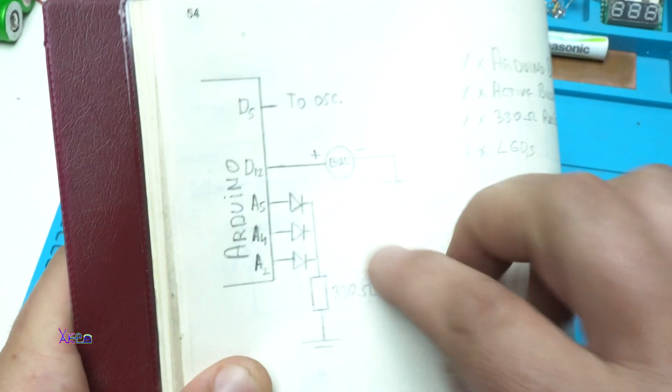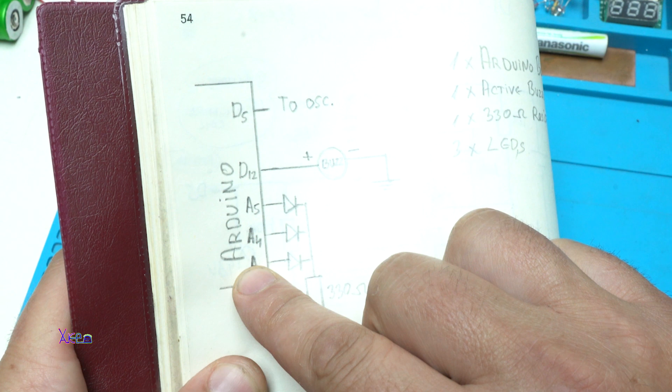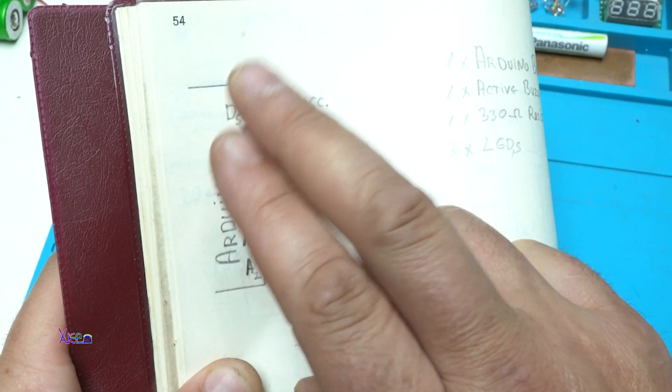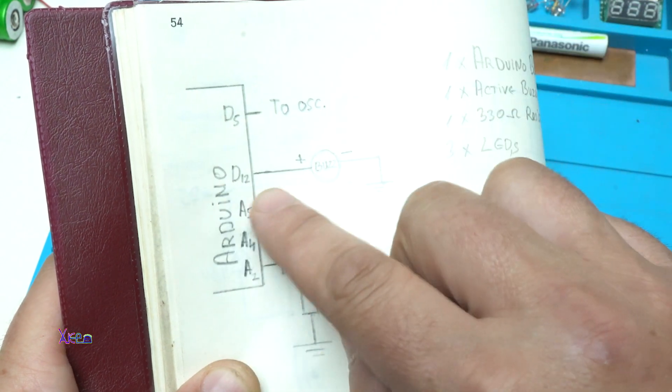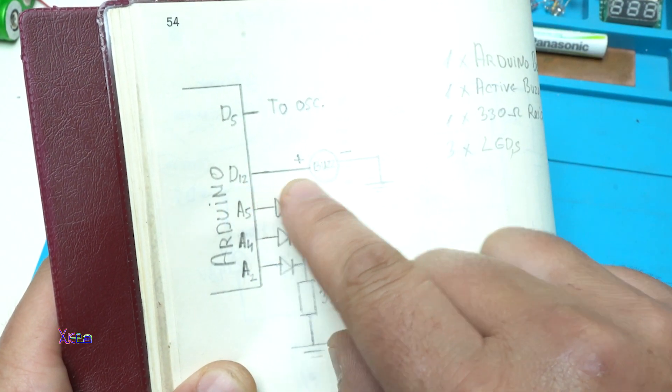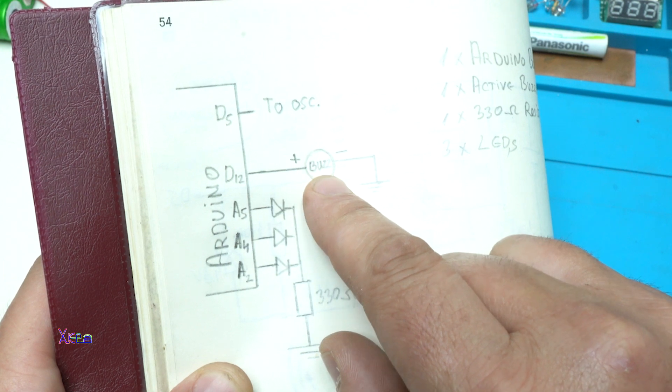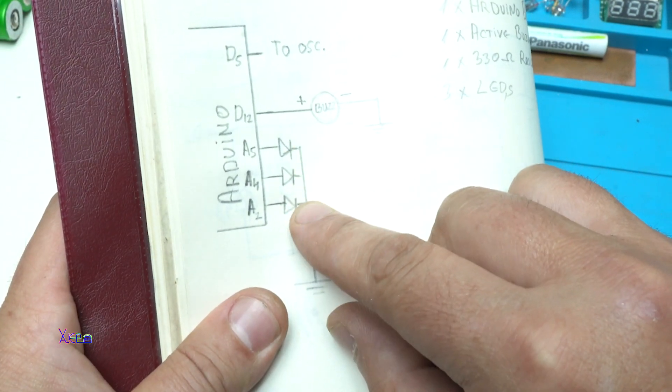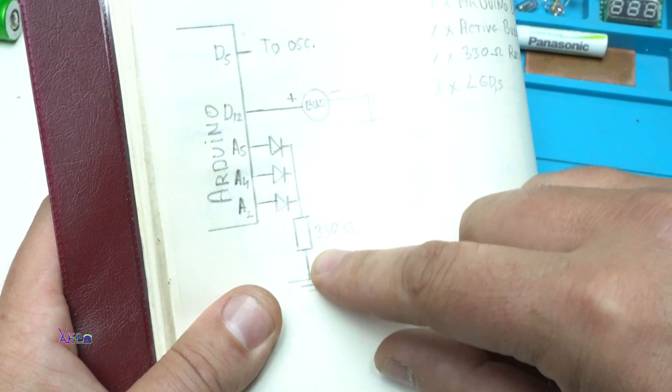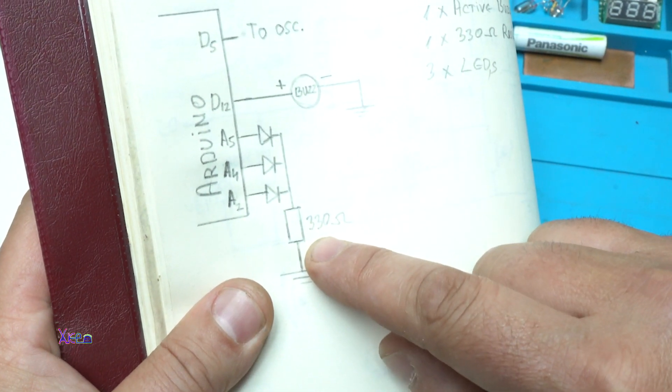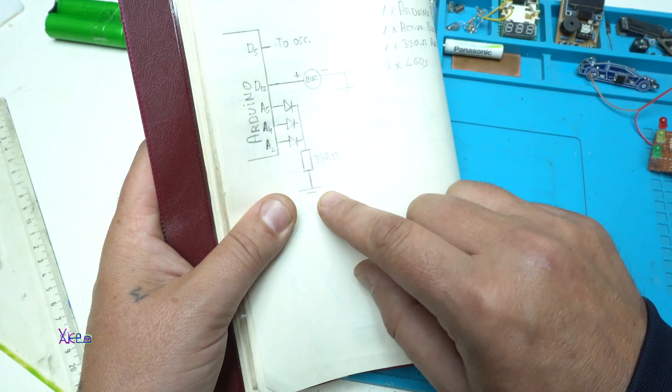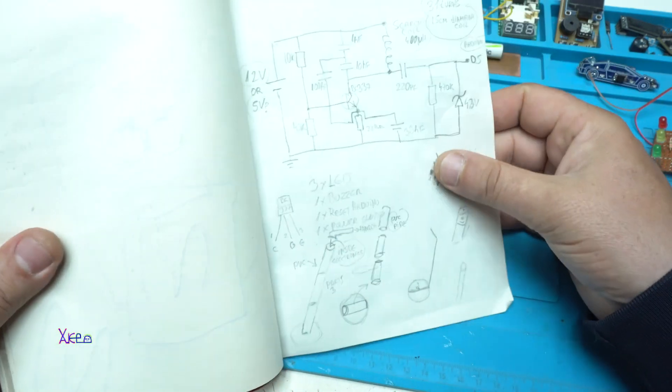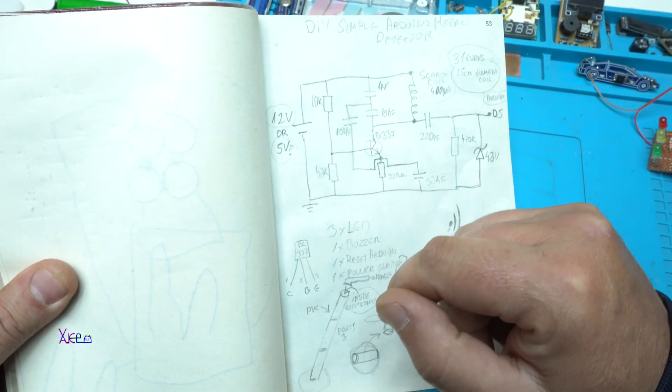You have the Arduino board. On digital pin number 5 you're gonna connect the oscillator. On digital pin number 12 you're gonna attach a buzzer, 5 volt active buzzer. You have three LEDs attached to resistors of 330 ohms to ground. The ground from the Arduino board and the ground from the oscillator should be connected together.